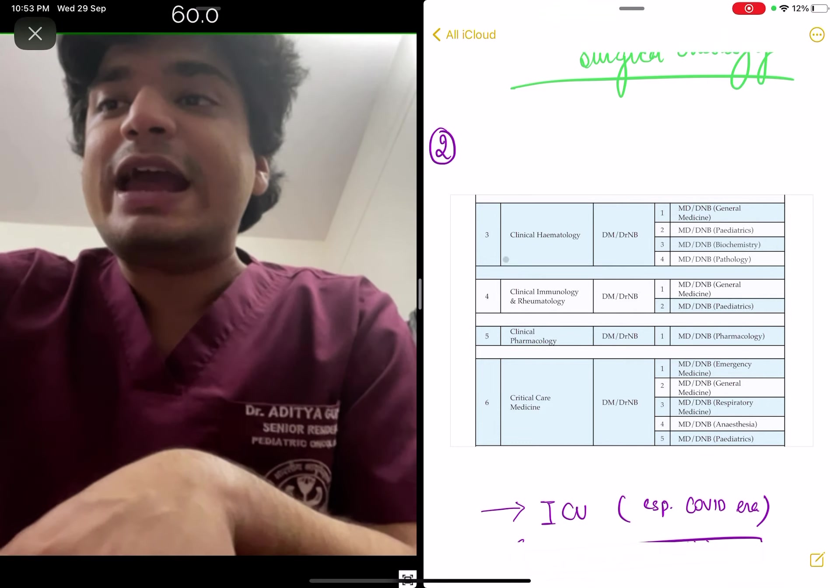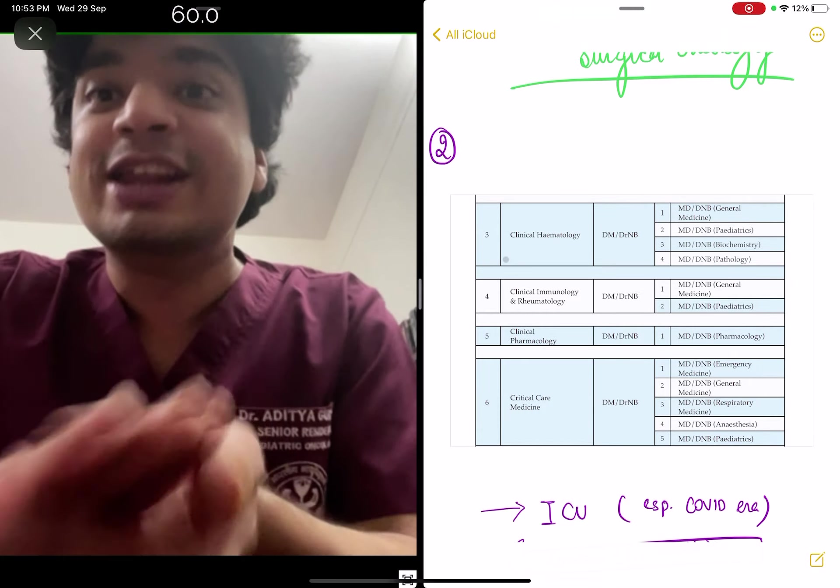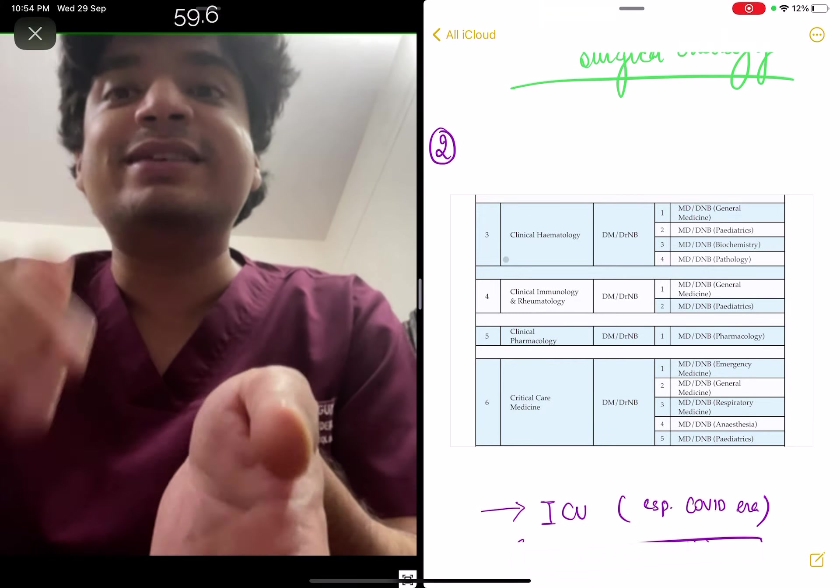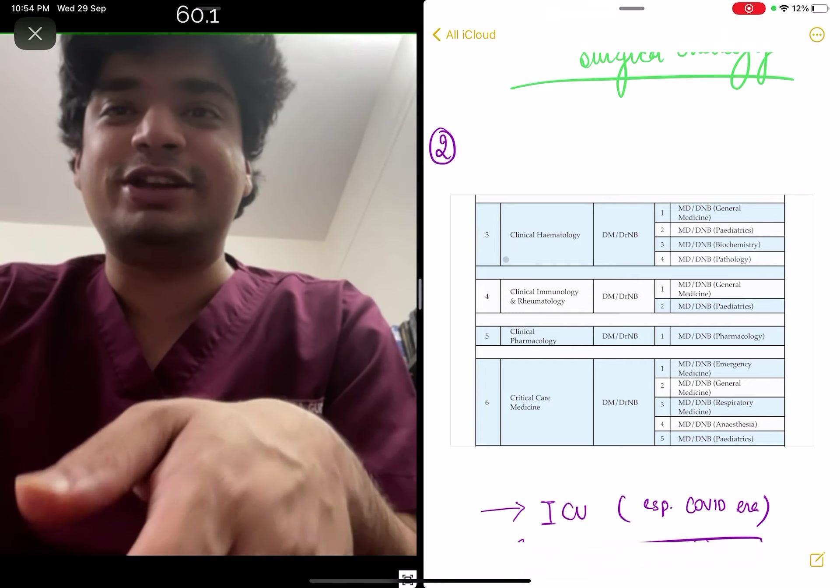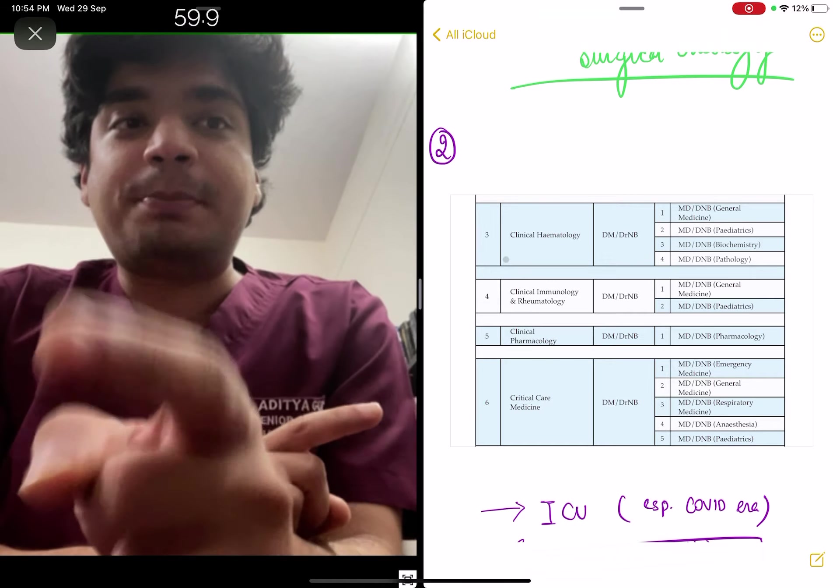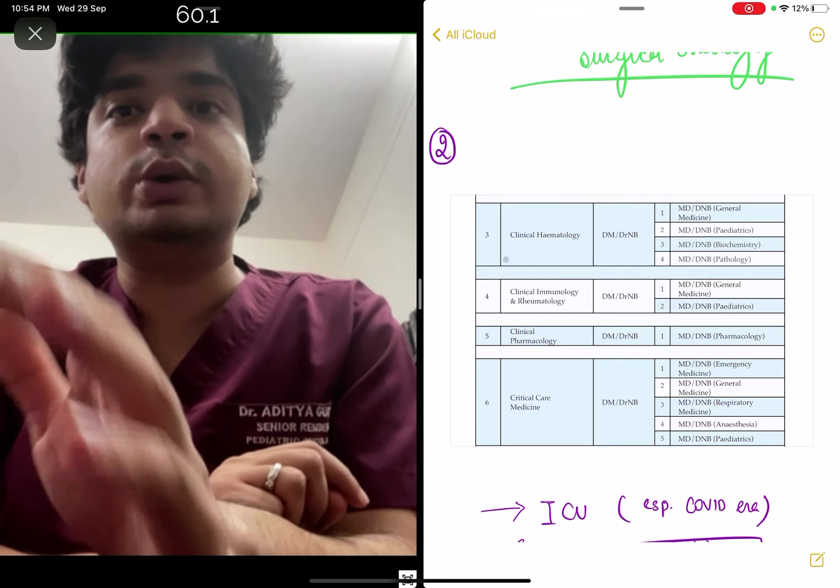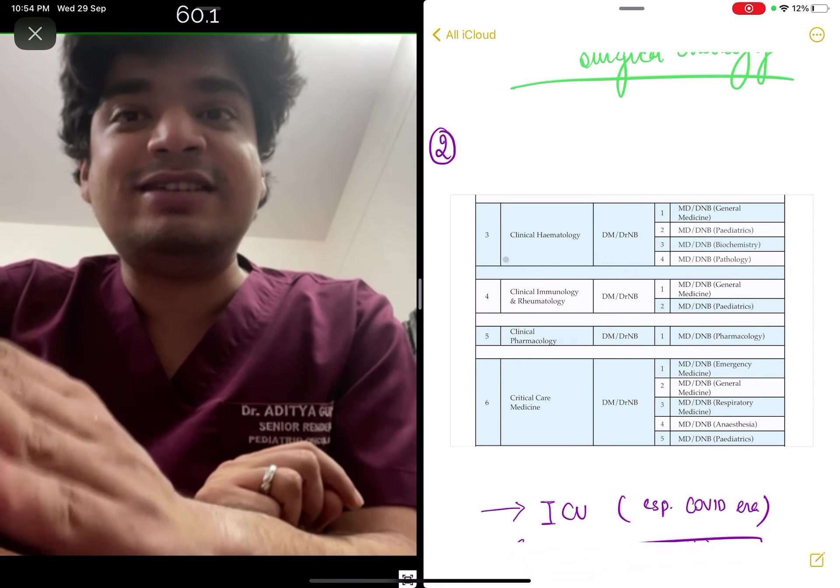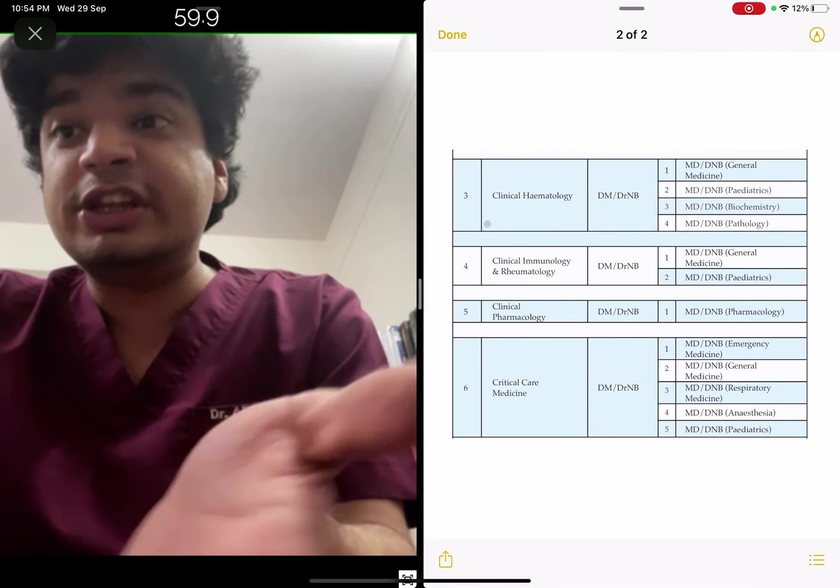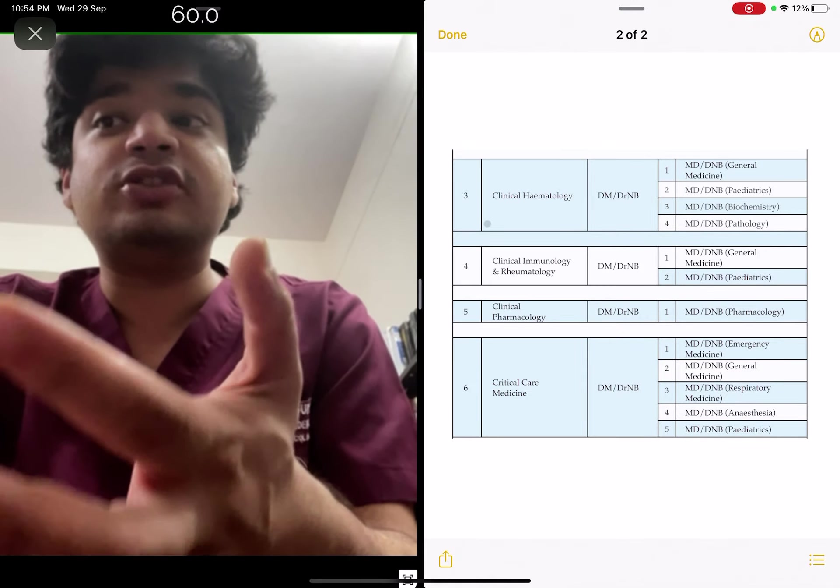For example, if you wanted to do DM in hematology and your MD was in pediatrics or pathology, 40 questions used to be from pediatrics, pathology, and medicine combined, while 40 questions were from hematology. But this year, 80 questions are going to come from just medicine and medicine subspecialties. Also, this order has a stay.